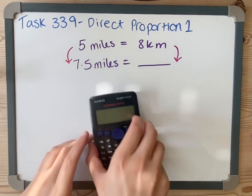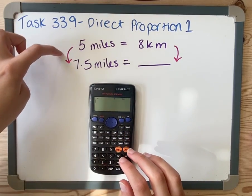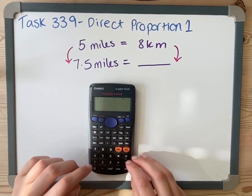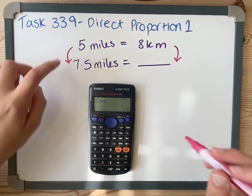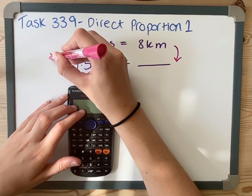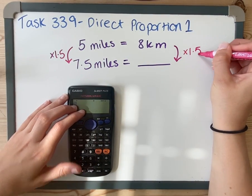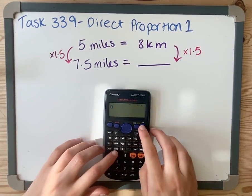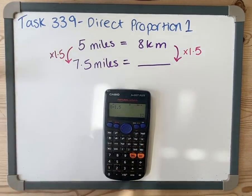To do that, I can use my calculator. If I want to know what 5 times something is 7.5, if I do 7.5 divided by 5, it will give me what I need to times it by. So that's multiplying by 1.5. I'm going to have to do the same thing over here: 8 times 1.5, which is 12 kilometers.